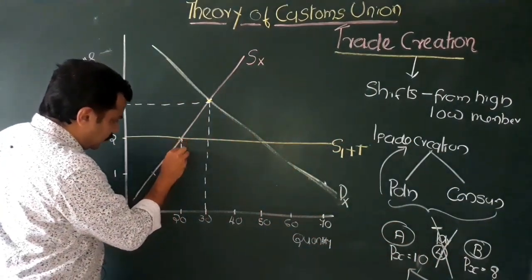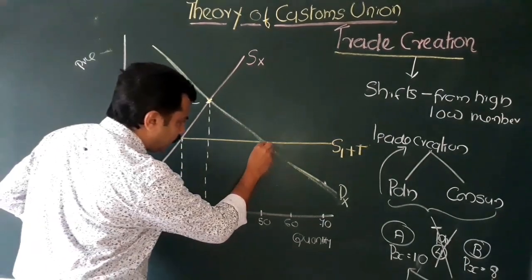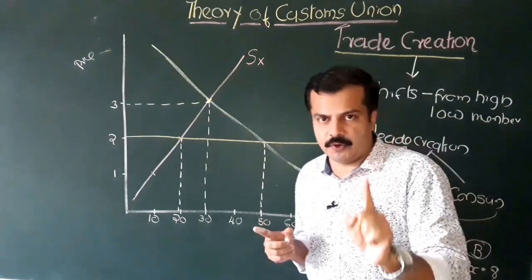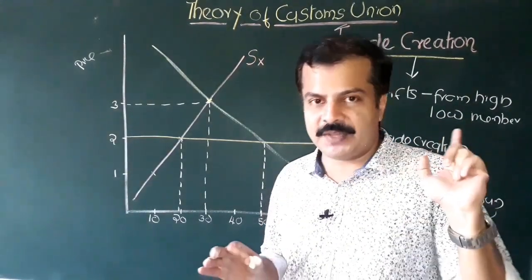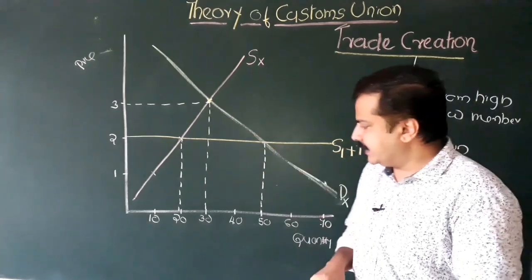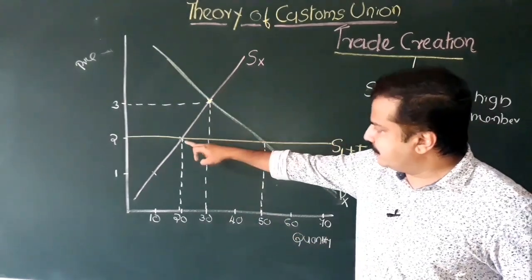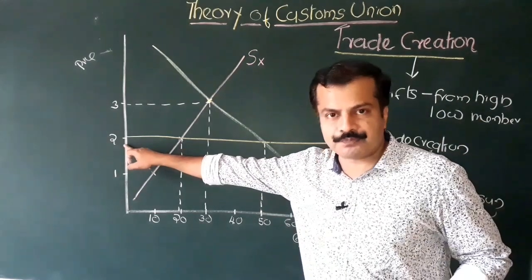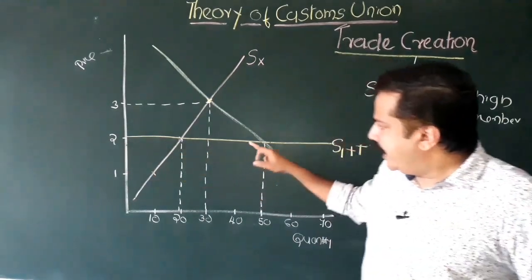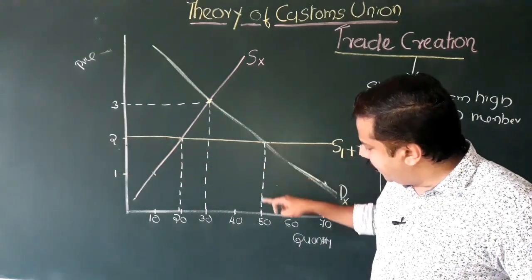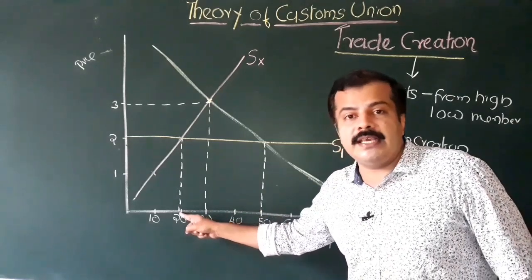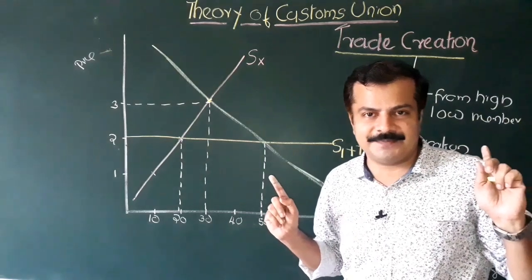When tariff is being included, the price of this commodity is Rupees 2 — that is the tariff-inclusive price of commodity X. At Rupees 2, the domestic demand for this commodity is 50, of which 20 is domestically produced and 30 is imported. So when there is tariff, the price of the commodity is 2, demand equals 50, domestic supply equals 20, and 30 is being imported.